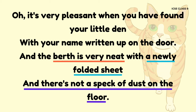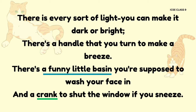Oh, it's very pleasant when you have found your little den with your name written upon the door. And the berth is very neat with a newly folded sheet, and there's not a speck of dust on the floor. In line 34, the phrase 'berth is very neat' is an example of consonance since the consonant sounds are repeated. In the same line, 'a newly folded sheet' is imagery since it uses language that creates visual mental pictures. Line 35, 'there is not a speck of dust on the floor,' is another example of hyperbole, using exaggeration to emphasize the cleanliness of the Nightmail train.